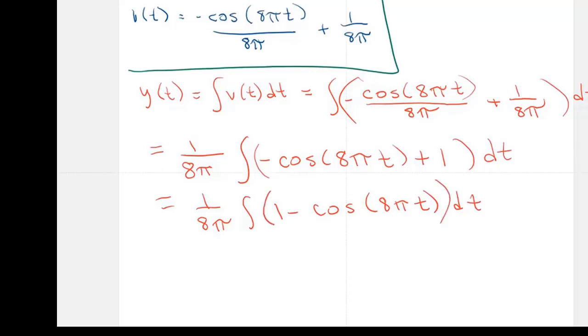Okay, and now we integrate. So we have 1 over 8π times the integral of 1 dt is T minus the integral of cosine is sine of 8π T divided by 8π. So we have 1 over 8π plus C.